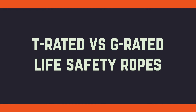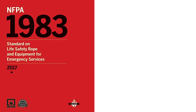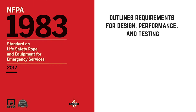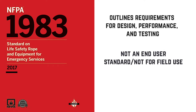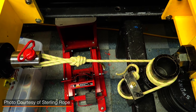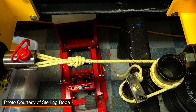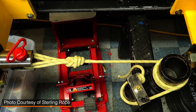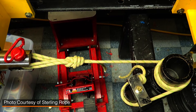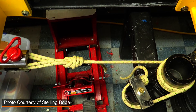The nomenclature T-Rated and G-Rated actually comes from the NFPA's 1983 standard on life safety rope and equipment. Now this is not actually a user standard — it was intended for manufacturers and testing labs — but we think it's still good for end users and the decision makers of your team to have a basic understanding of what's in the standard.